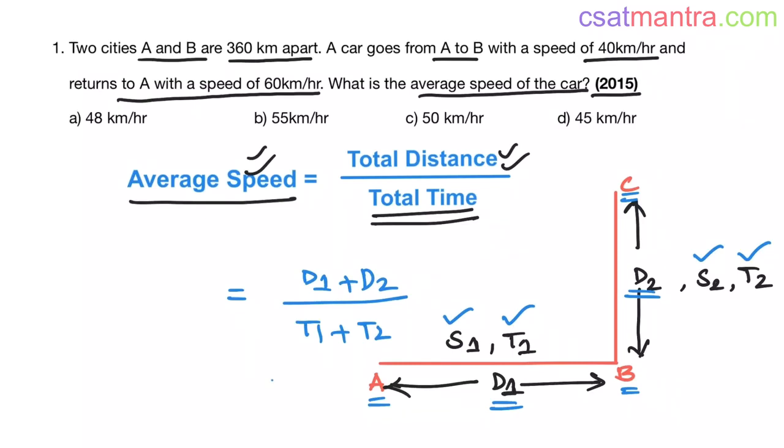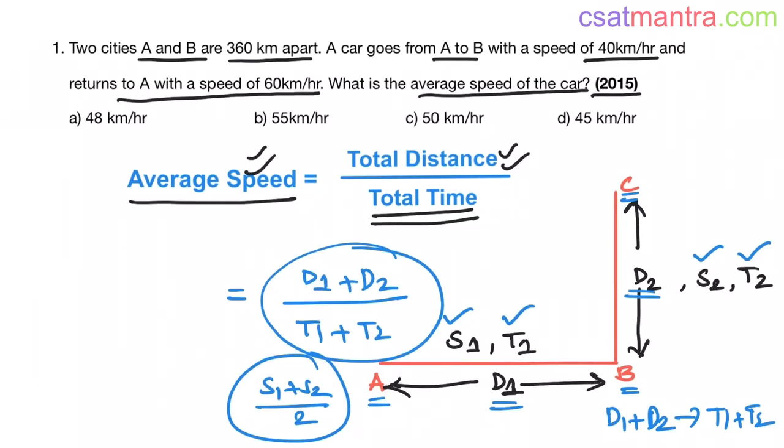It is not s1 plus s2 by 2, because what is meant by average speed is if you travel with this speed, you will be able to cover d1 plus d2 distance in t1 plus t2 time. So don't confuse and don't make this mistake. If there are three parts, in that case d1 plus d2 plus d3 by t1 plus t2 plus t3. Any number of distances given, just add them and divide it with total time.